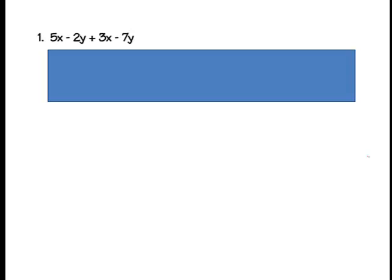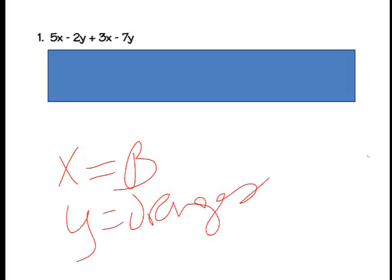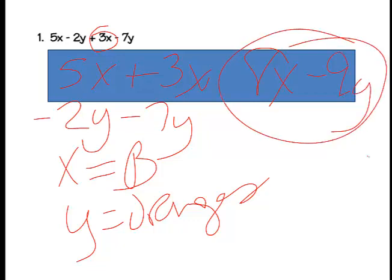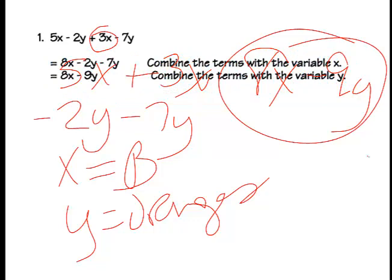Let's combine this expression. Let's make the X's our bananas and the Y's our oranges. We've got 5 bananas and 3 more bananas, then negative 2 oranges minus 7 more oranges. That gives us 8 bananas — 8X — and negative 2 minus 7 is negative 9, so minus 9Y. Our answer is 8X minus 9Y.